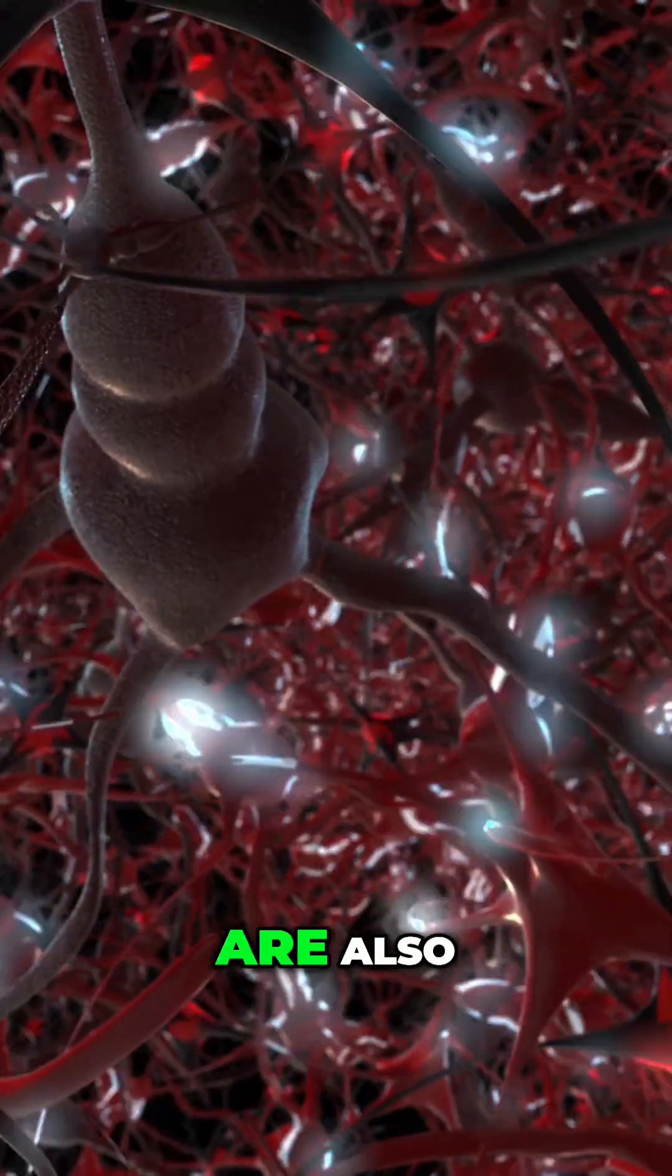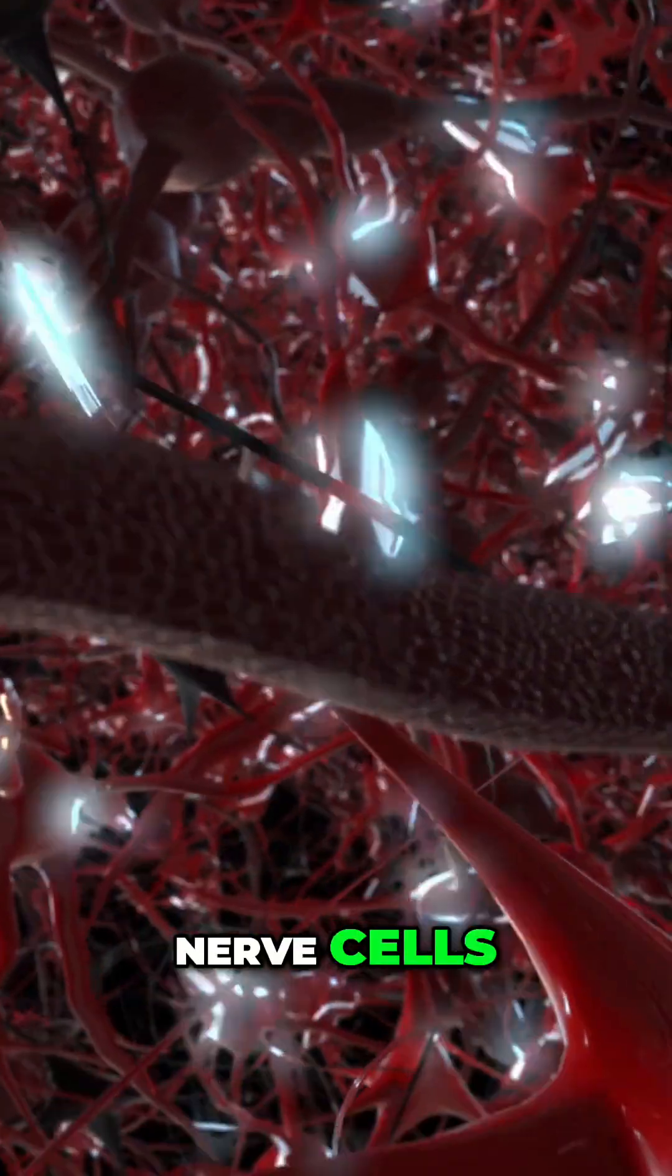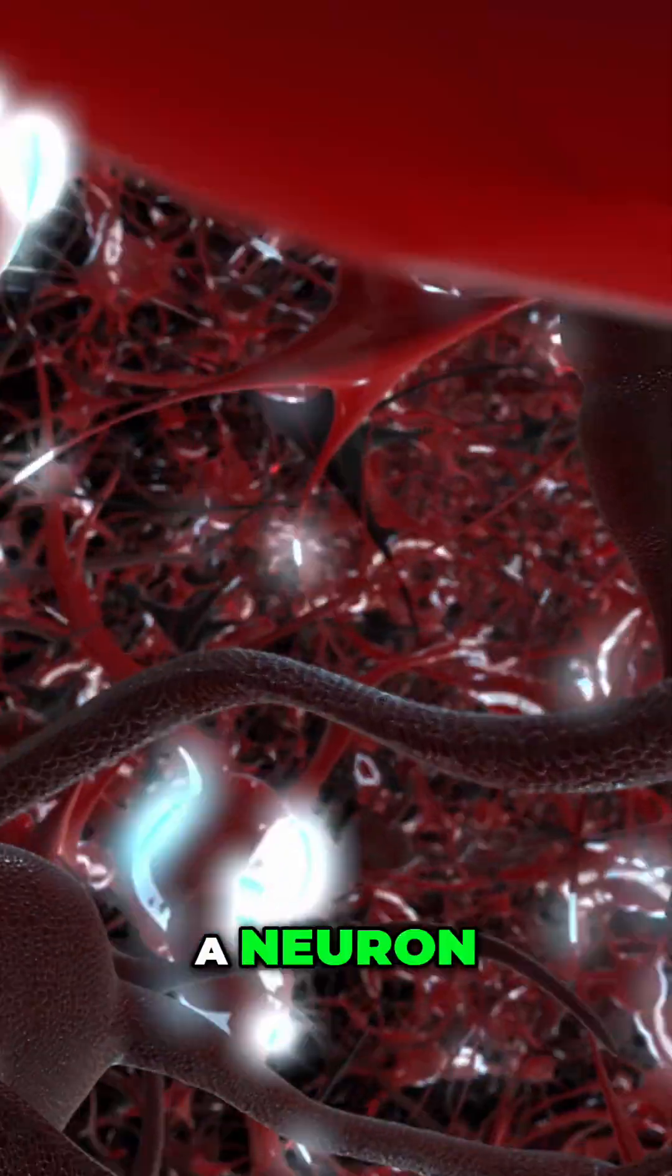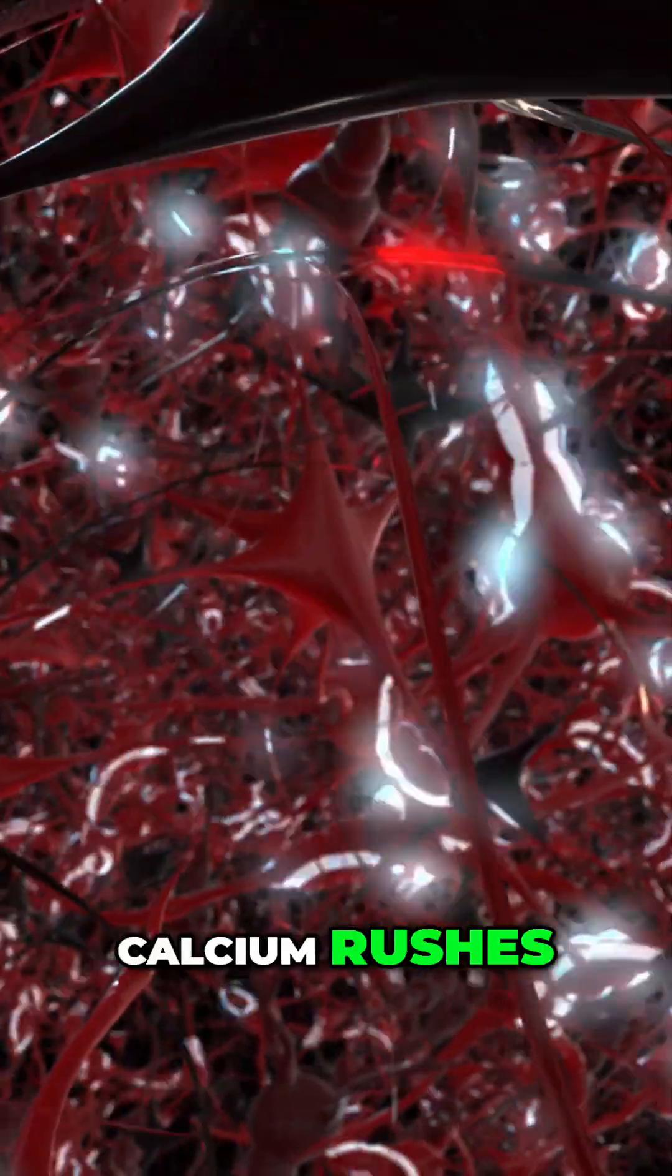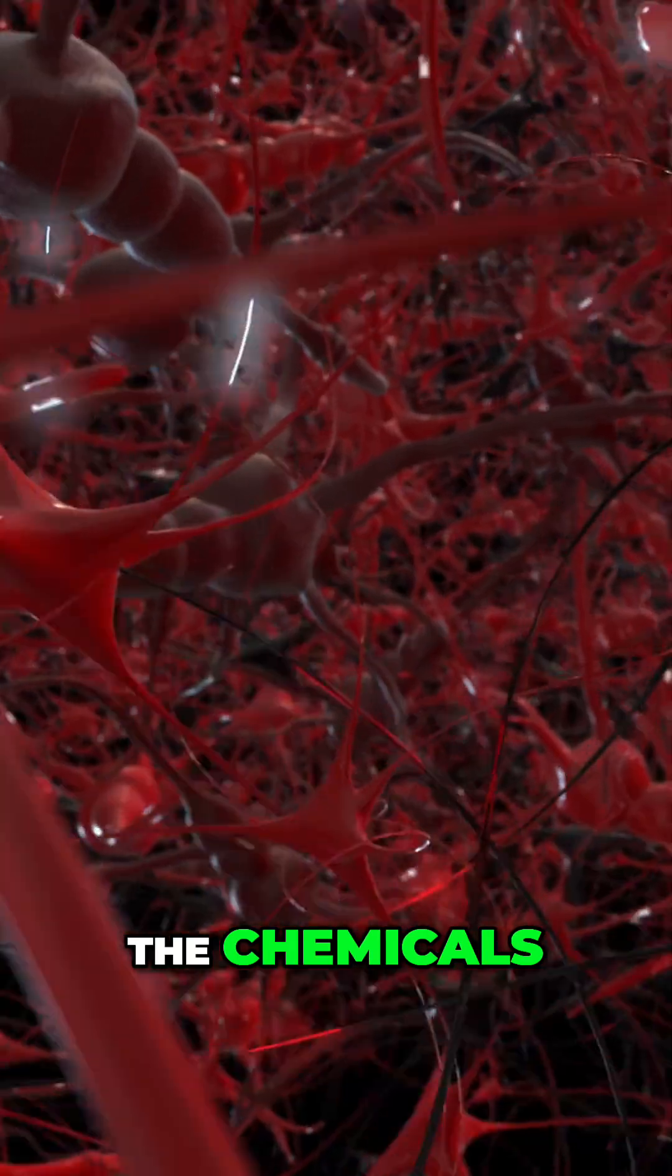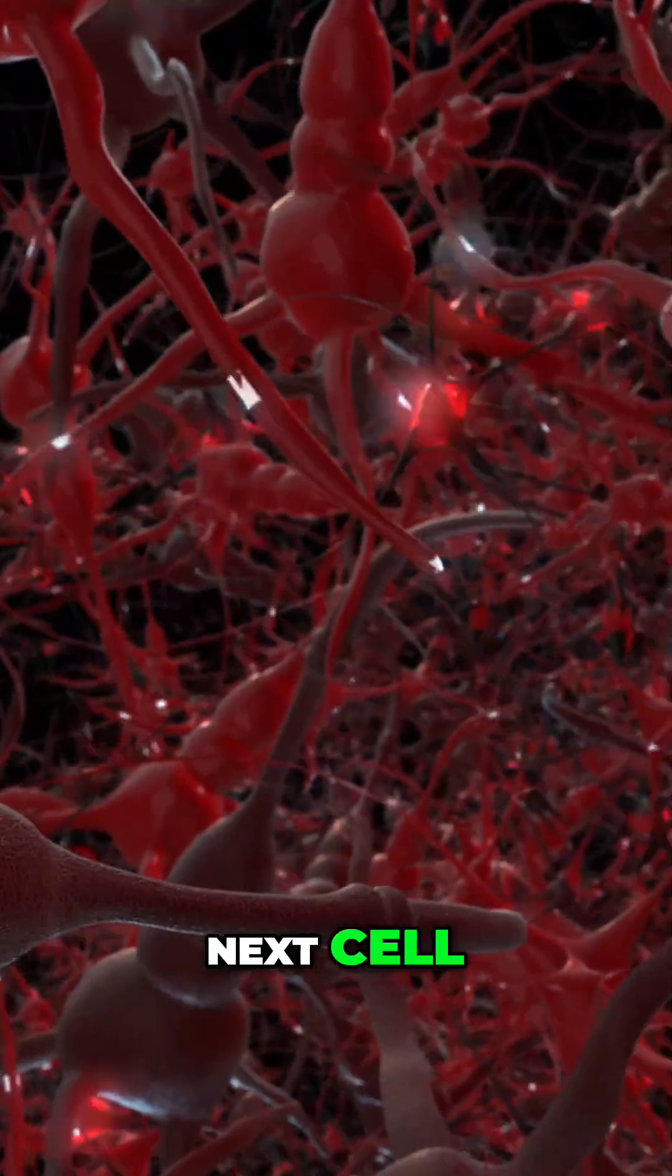Calcium ions are also essential in nerve cells. When a nerve impulse reaches the end of a neuron, calcium rushes in and causes the release of neurotransmitters, the chemicals that transmit the signal to the next cell.